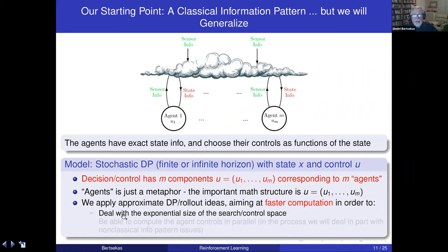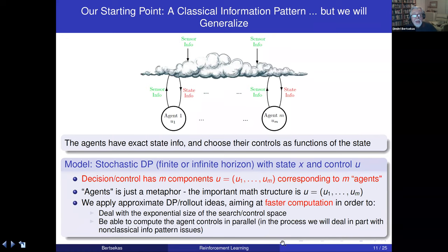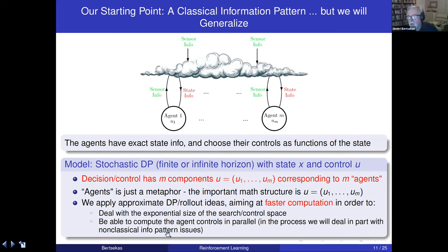Even if each agent has only two possible controls, the joint search space has size 2^m, which quickly becomes astronomical. Our goal is to apply approximate dynamic programming and rollout ideas to achieve faster computation and deal with this exponential search space. A second goal is to allow agents to have some autonomy — applying controls simultaneously rather than waiting for each other — while still maintaining coordination. This issue of parallelism is related to non-classical information patterns that arise when agents act autonomously.